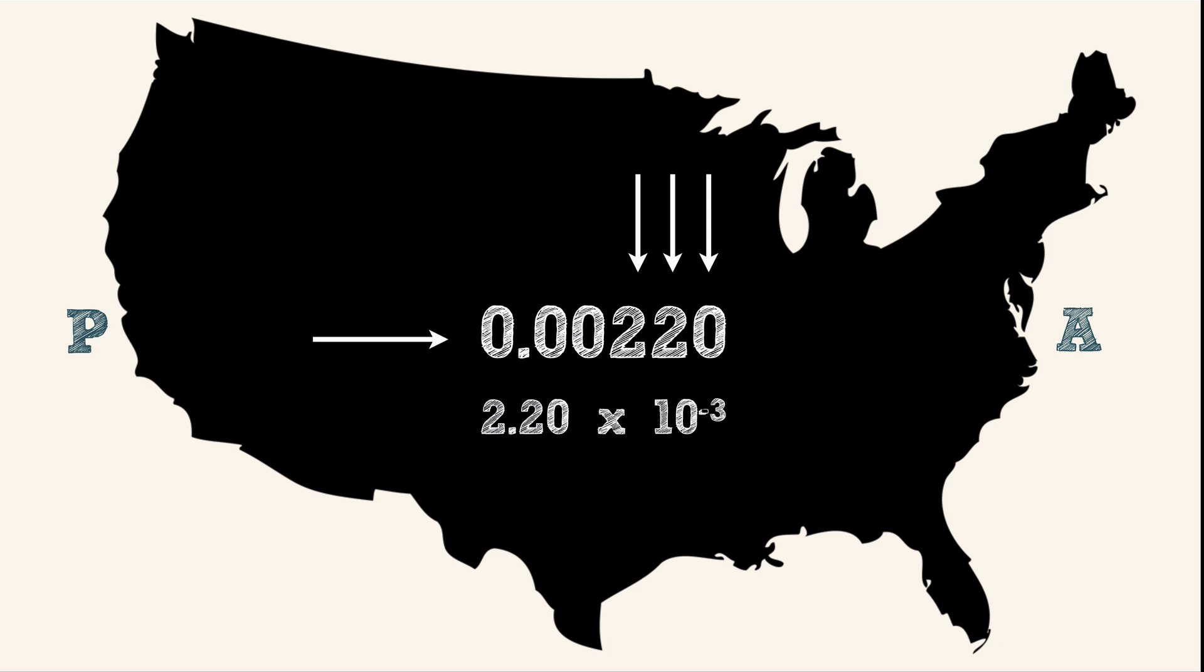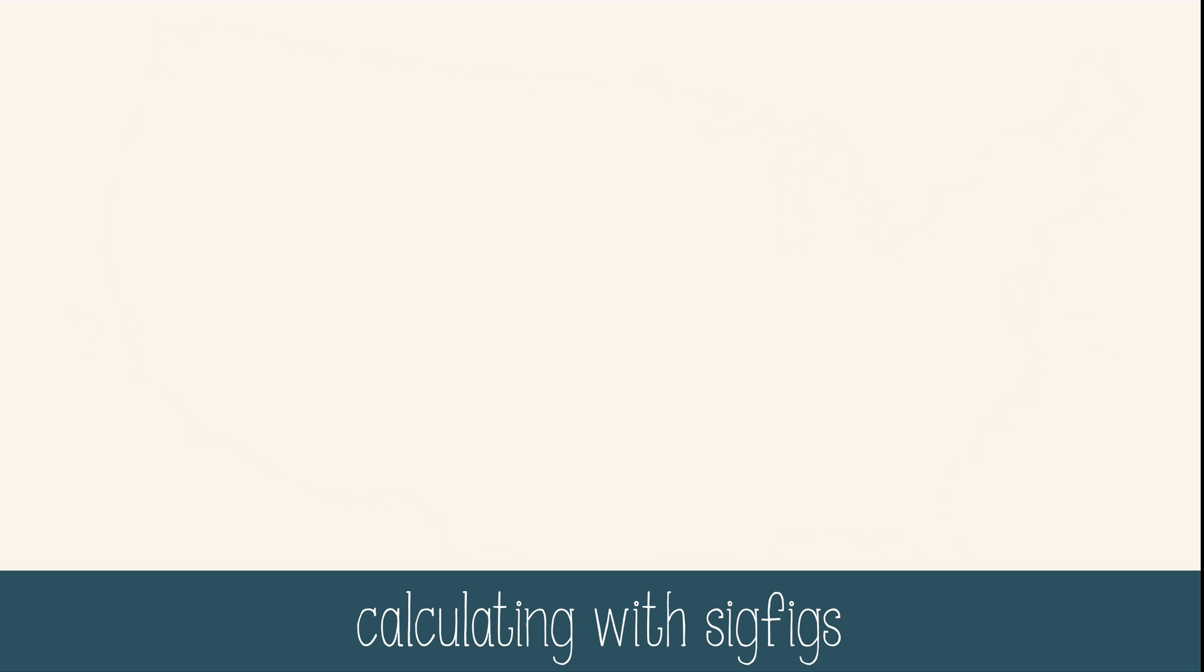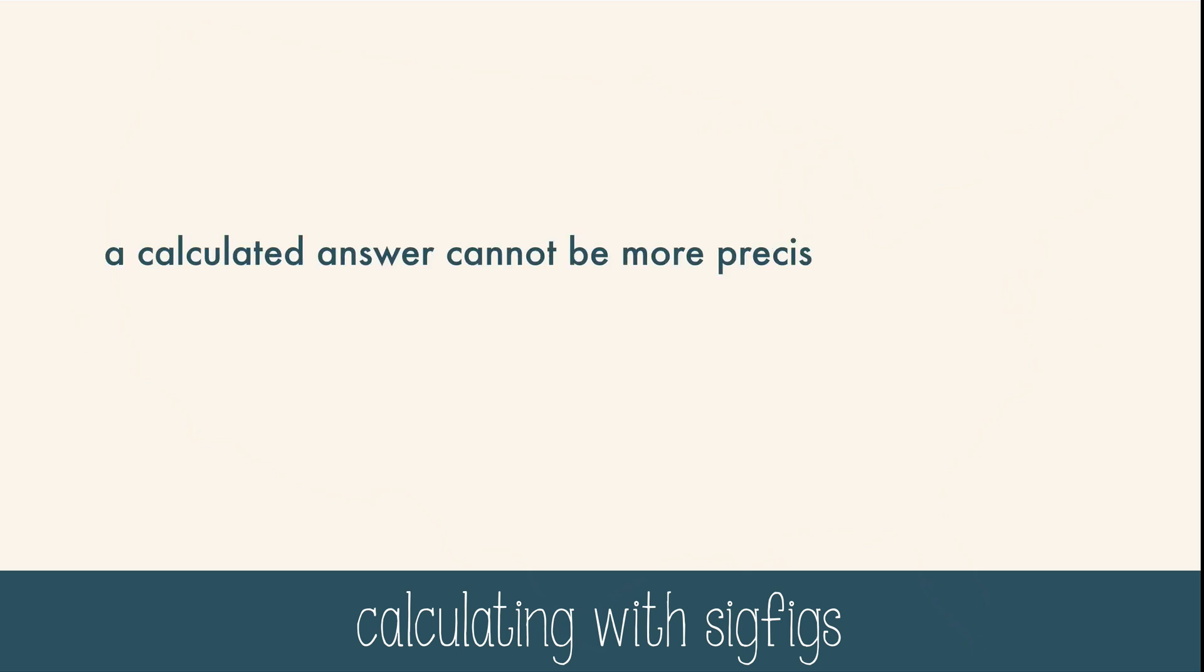When you calculate with significant figures, you need to remember a general rule: a calculated answer cannot be more precise than the least precise measurement from which it was calculated. Basically, you can't pretend you were more precise with a measurement than you actually took. You have to round your answer to the least specific measurement.